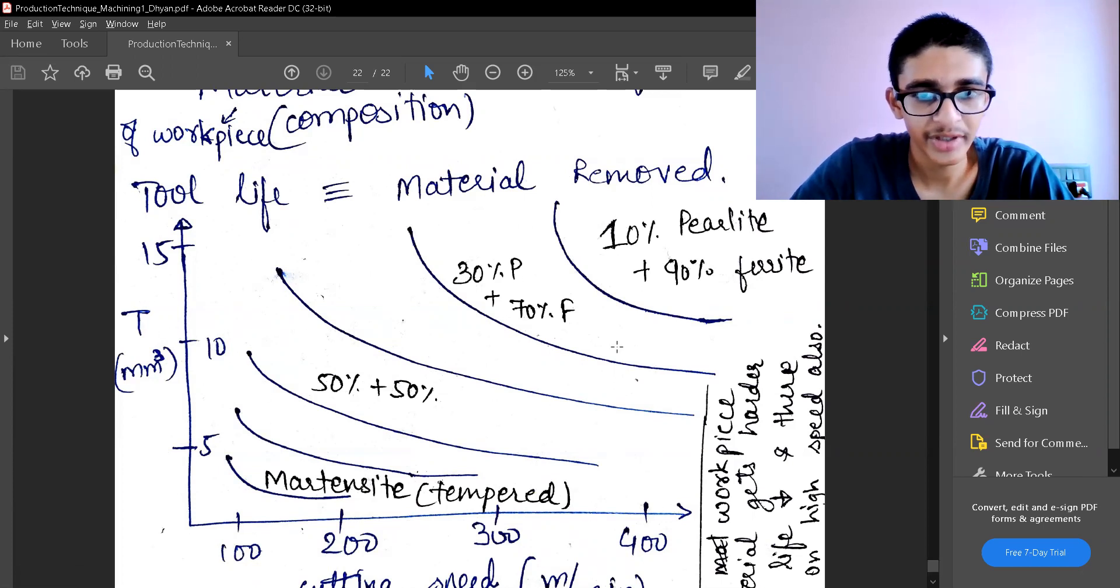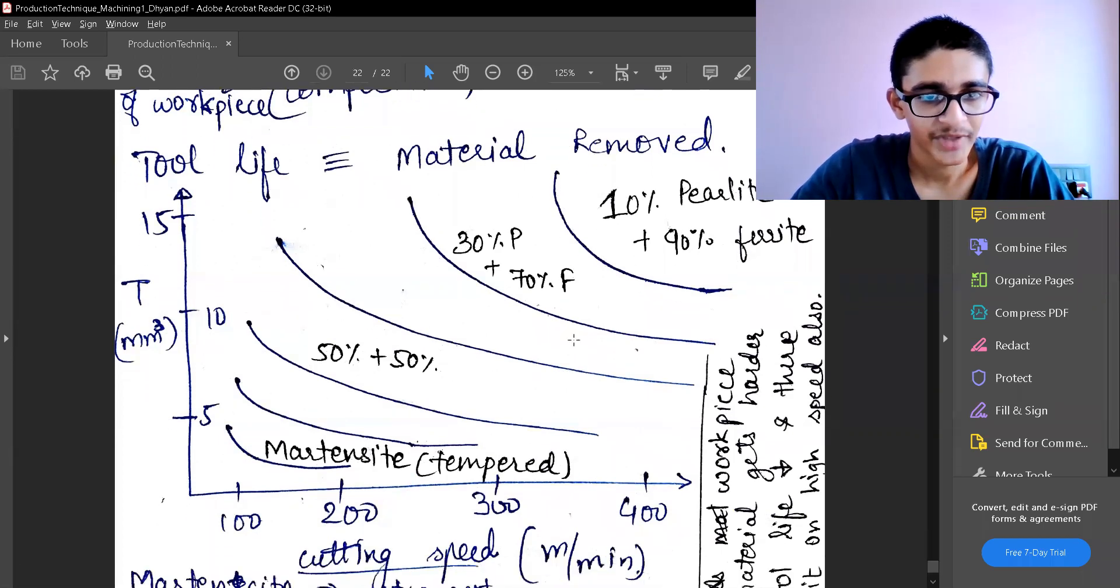So that means that ferrite is a preferred type, and as we come down to 50% and 50%, at the same velocity I'm going to have lesser tool life. So if we fix at some velocity...